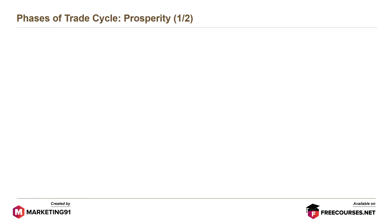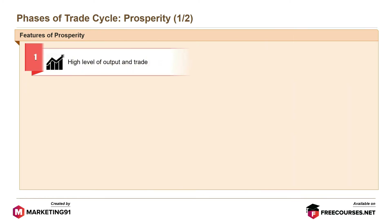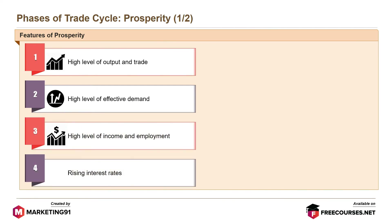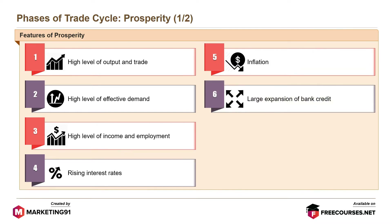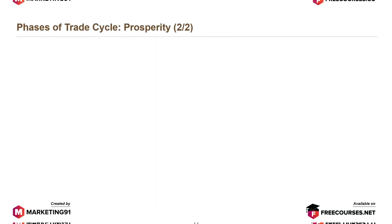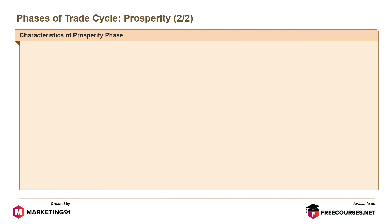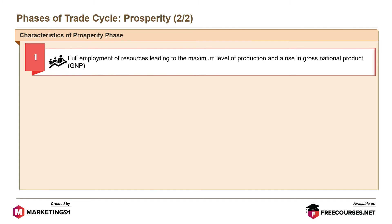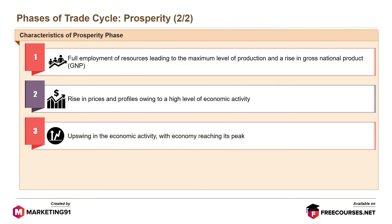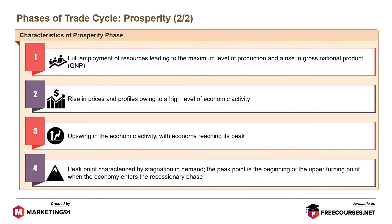The next phase is the prosperity phase. Its features are: high level of output and trade; high level of effective demand; high level of income and employment; rising interest rates; inflation; large expansion of bank credit; overall business optimism; and high level of MEC and investment. Characteristics include full employment of resources leading to maximum production and a rise in GNP; rising prices and profits owing to high economic activity; and an upswing reaching the peak, which is characterized by stagnation in demand and marks the beginning of the recessionary phase.